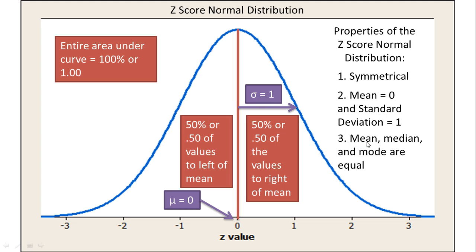And then finally, the mean, the median, and the mode are all equal in a z-score distribution. So if we know that the mean is equal to zero, then that tells us also that the median and the mode are also equal to zero.